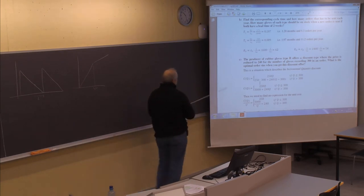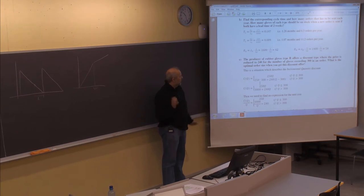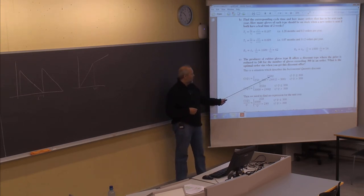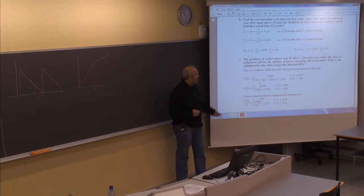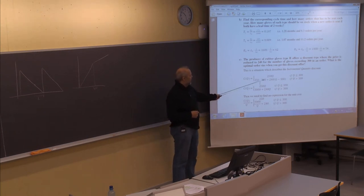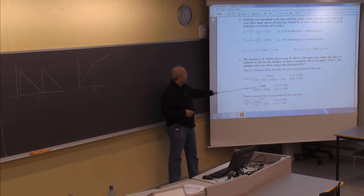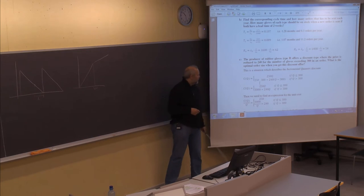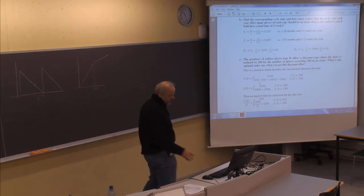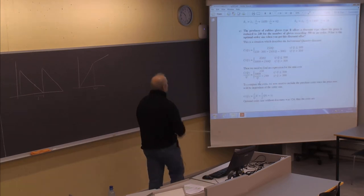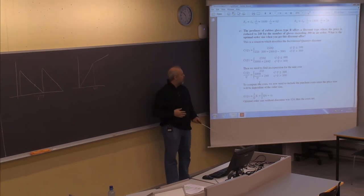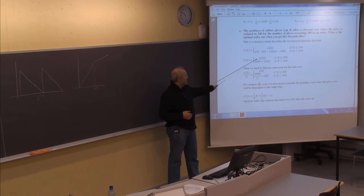Looking at the cost function: if ordering 300 or fewer, we pay 250 per unit, so total cost is 250q. If ordering more than 300, we pay 250 for the first 300 units and 240 for those exceeding 300, giving: 250×300 + 240×(q−300), which simplifies to 30,000 + 240q. So the two options are 250q, or 30,000 + 240q.